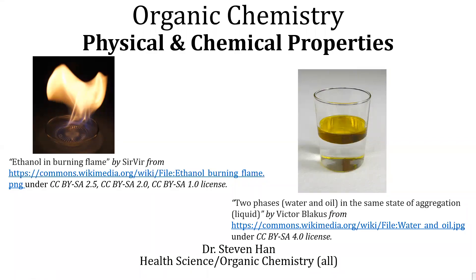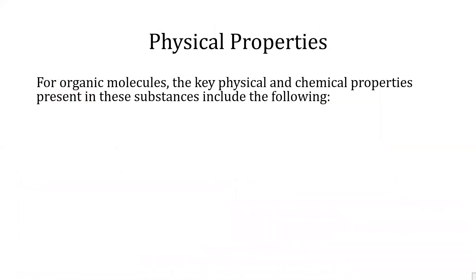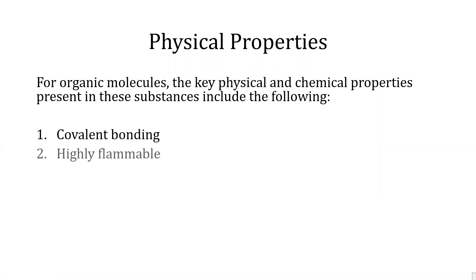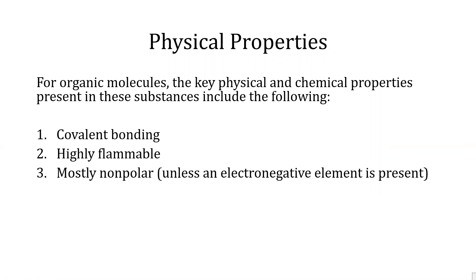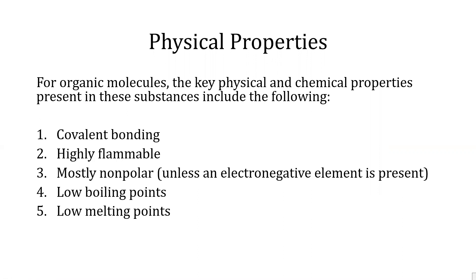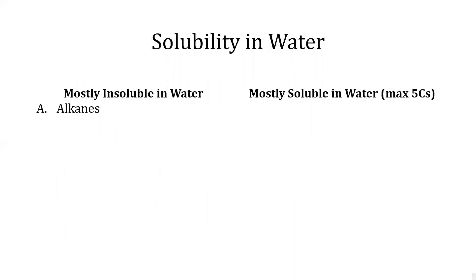This lecture is on physical and organic properties in organic chemistry. For organic molecules, the key physical and chemical properties include: one, covalent bonding; two, highly flammable; three, mostly non-polar unless an electronegative element is present; four, low boiling points; five, low melting points; six, mostly insoluble in water.